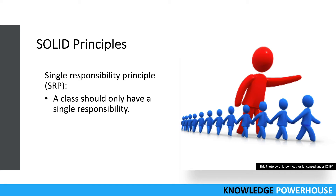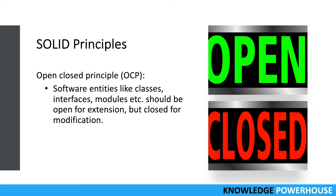The benefit of Single Responsibility is that any change in a class won't impact a large number of other classes. If you need to add a feature, it impacts only that specific class rather than requiring changes across many places. This minimizes invasive changes in the future. Examples include using a builder pattern, helper classes, or utility classes — you only change one specific place when a feature changes.